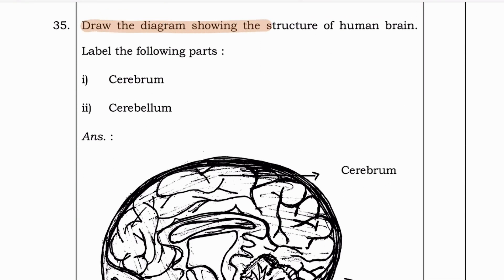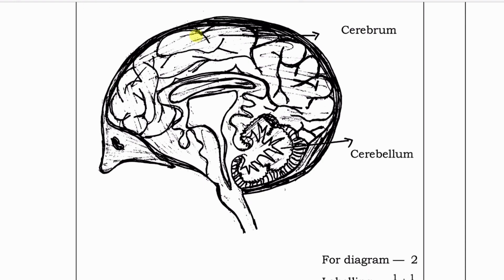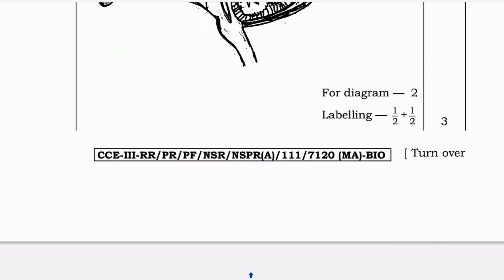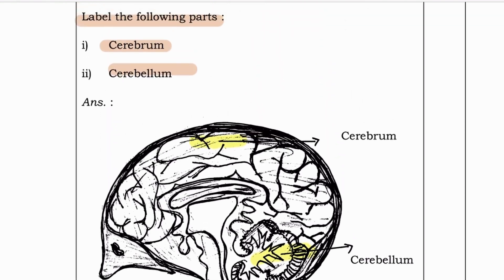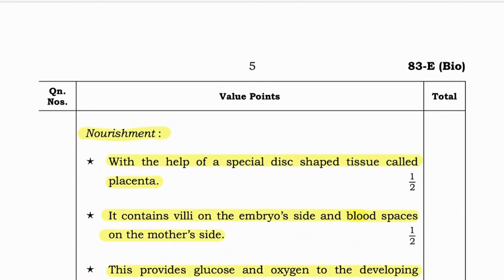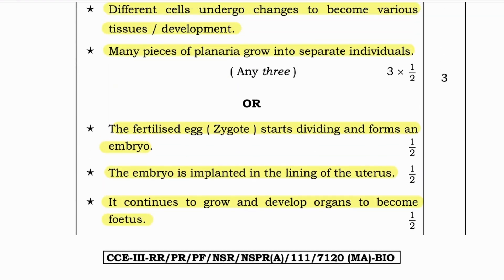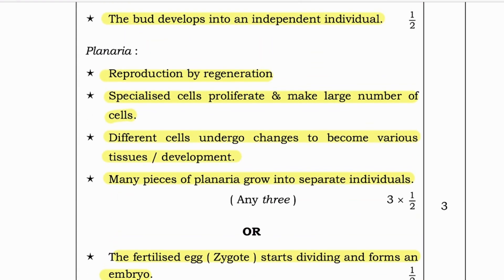Next question: Draw the diagram showing the structure of the human brain, labeling the cerebrum and cerebellum. This is the cerebrum and this is the cerebellum. That's all for this video. I hope these three marks questions and answers help you in your SSLC science preparation. Stay tuned for the next part where we will cover more important questions. Thank you.